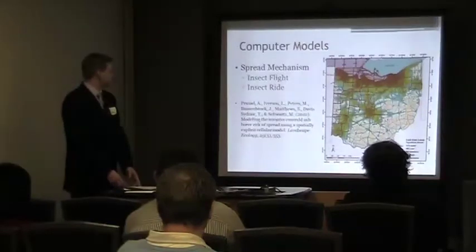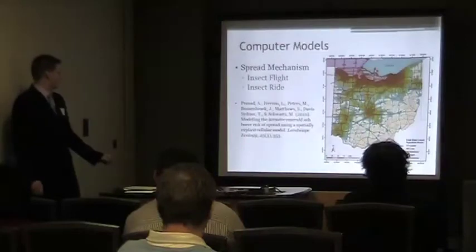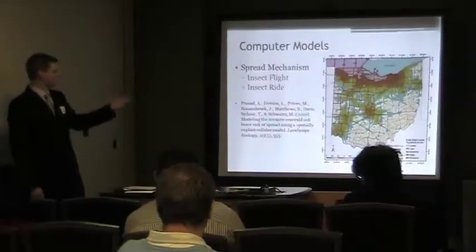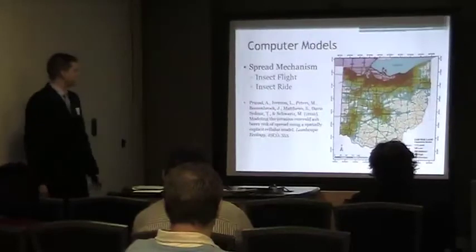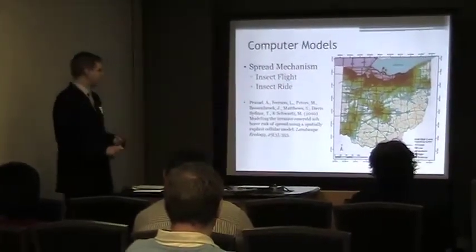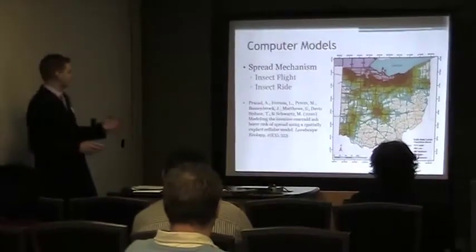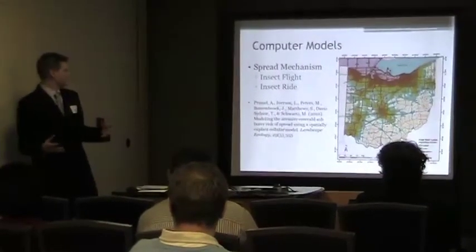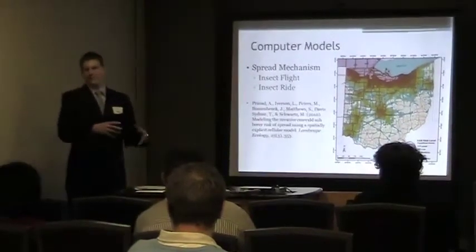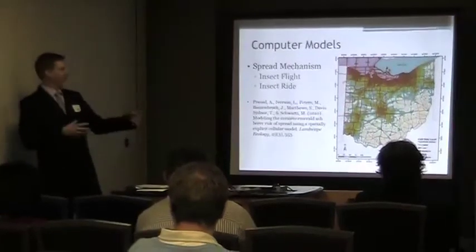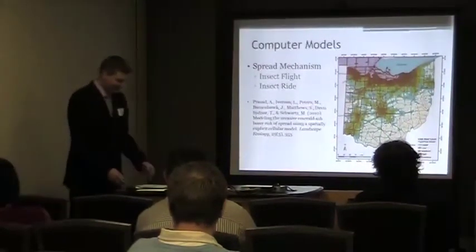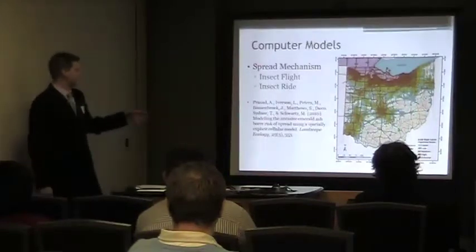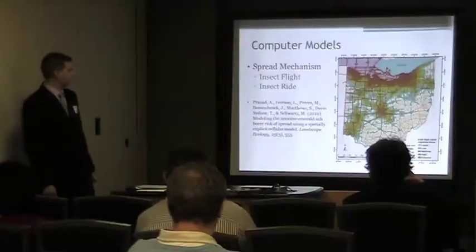A model by Prasad, Iverson, Peter Rosebeck, Matthew Davis, Snyder, and Schwartz modeled in 2010 the likelihood of spread through Ohio. It used two components: insect flight — how the insect naturally spreads through its own dispersion — and insect ride — how it may attach to human-transported materials, such as when camping or transporting firewood across state lines. Looking at major roads, campsites, wood processing and shipping plants, as well as quarantines in effect at the time, they developed a probability of dispersion through Ohio.